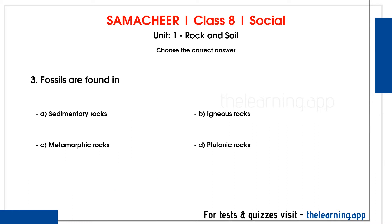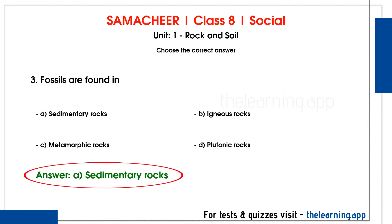Next question: Fossils are found in dash. Options are A. Sedimentary rocks, B. Igneous rocks, C. Metamorphic rocks, D. Plutonic rocks. Correct answer is option A, Sedimentary rocks.